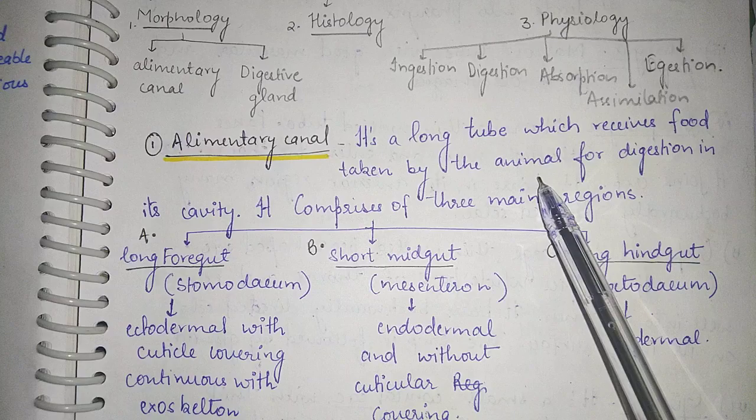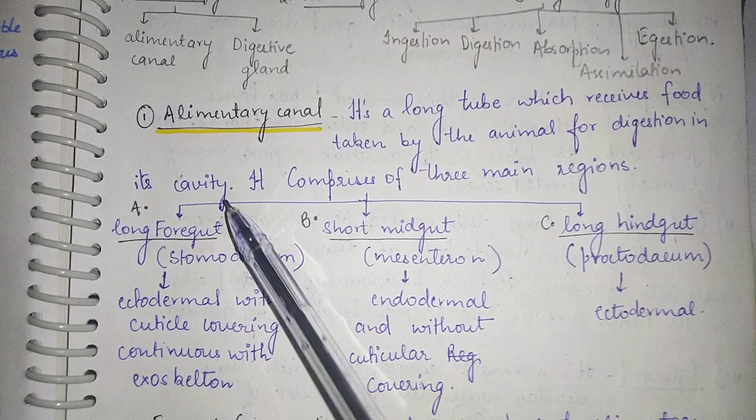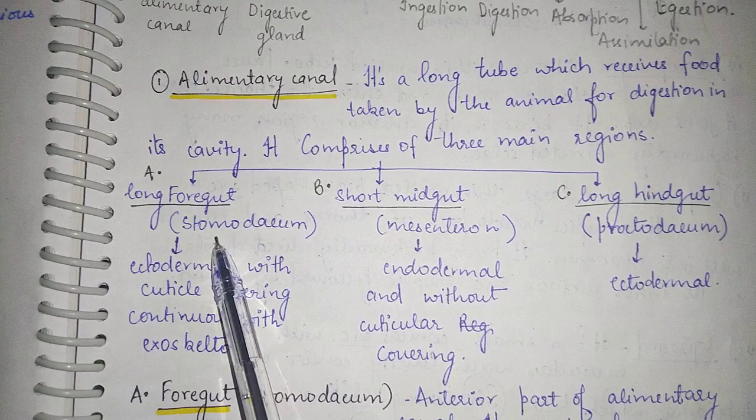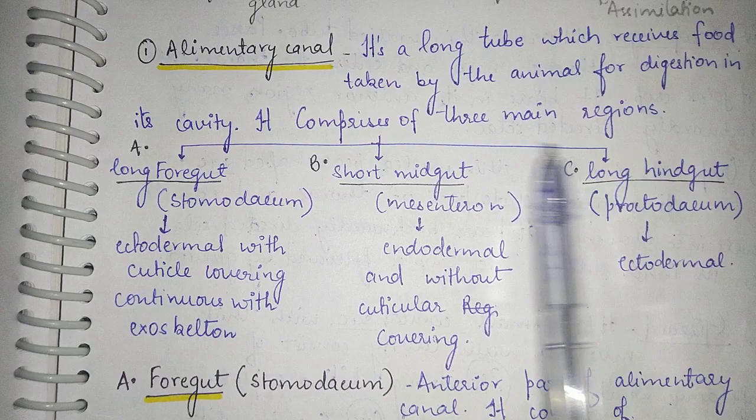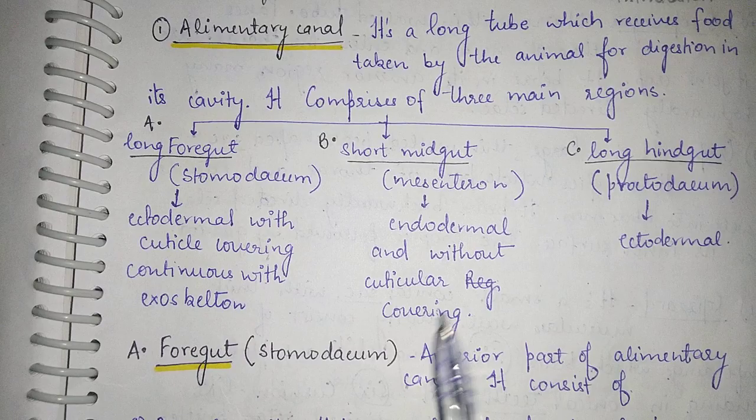The alimentary canal is a very long tube which receives the food taken by the animal for digestion in its cavity. It is divided into three regions: a long foregut, a short midgut, and a long hindgut. The foregut is also called stomodeum, the midgut is called mesenteron, and the hindgut is called proctodeum. The foregut and hindgut are both ectodermal in origin with cuticular covering continuous with the exoskeleton, while the short midgut is endodermal in origin and without cuticular covering.